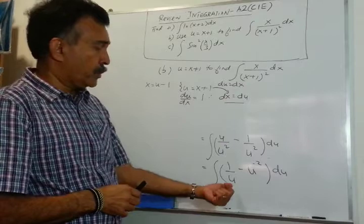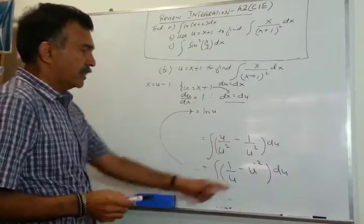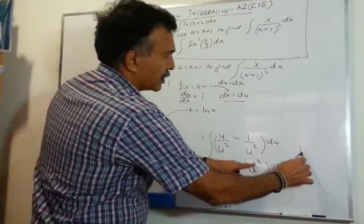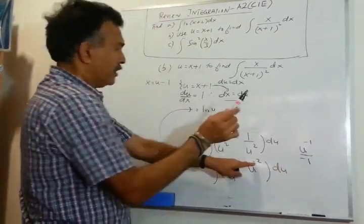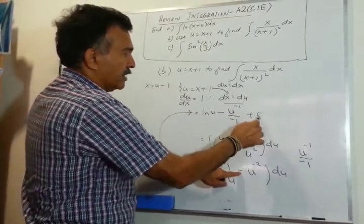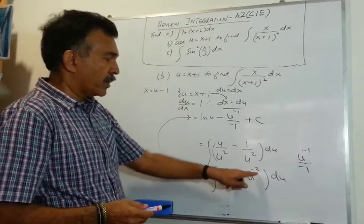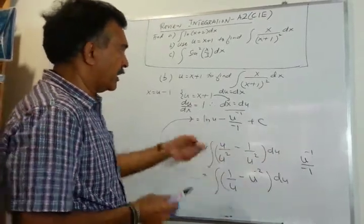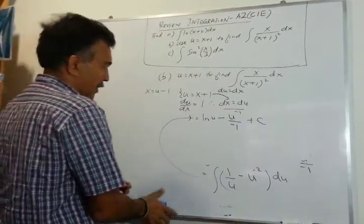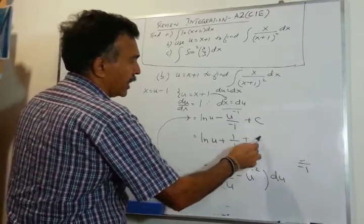Integrating 1/u gives ln u. For 1/u², that's u to the power of minus 2; increasing the power by 1 gives minus 1, so the integral of u⁻² is u⁻¹ over negative 1. Combining, we get ln u plus 1/u plus c.